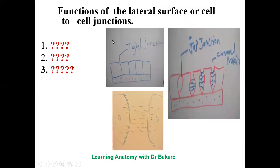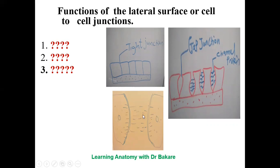The functions of the lateral surface or cell-to-cell junctions can be attributed to the type of junction present. The tight junction controls the movement of ions along the epithelium lining through regulated movement. The gap junction allows movement of molecules or ions through the channel protein embedded between cells. The desmosome creates structural support and tensile strength for the lining epithelial cells and is not involved in the transportation of molecules or ions, but rather gives strength.